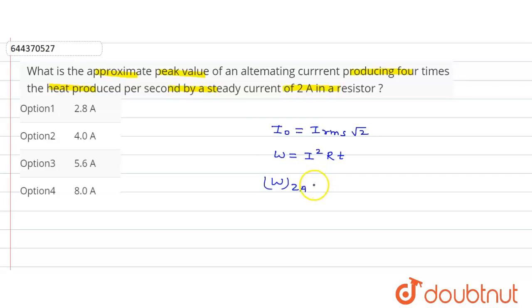This will be I² which is (2 ampere)² times R times t, where t is one second. So W_2A equals 4R.